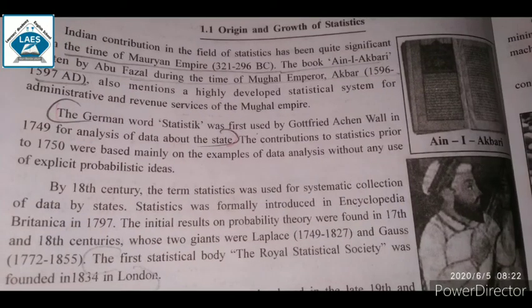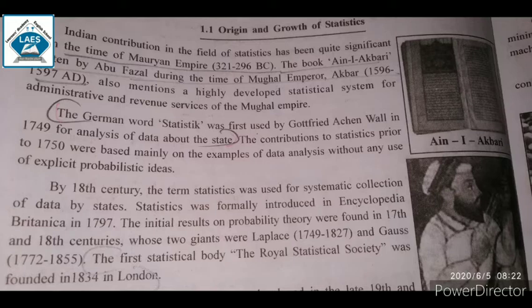The German word 'Statistik' was first used by Gottfried Achenwall in 1749 for analysis of data about the state. So, the first person who used this word was Gottfried Achenwall, in the year 1749.